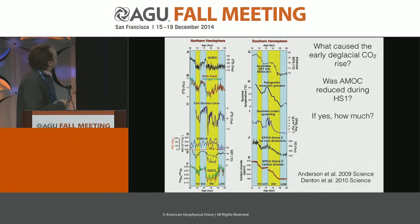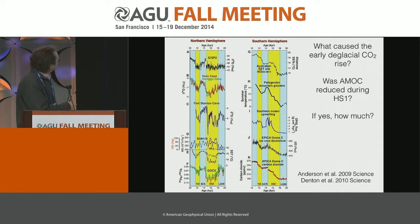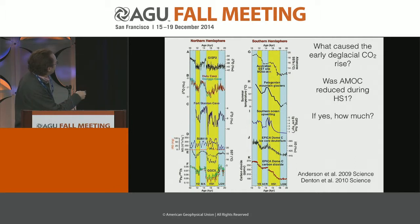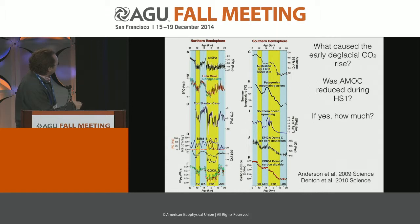Here's a figure from a paper — I think this is by Denton et al., but there was also a paper by Anderson. These are paleo records from the last deglaciation. Time goes from right to left, the LGM is on the right, and here is the Heinrich Stadial 1, this broad yellow bar. You can see the CO2 rise during Heinrich Stadial 1, which was about 30 or 40 ppm during a time period of about 3,000 years. During the same time, Antarctica was warming, whereas Greenland isotopes indicate cold temperatures in the north.